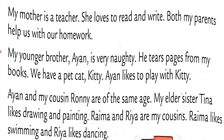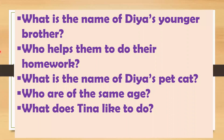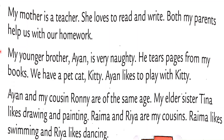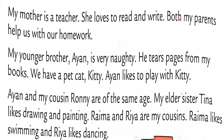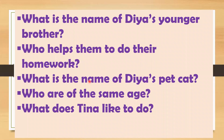Now a few questions: What is the name of Dia's younger brother? The answer is Ayan. Who helps them with their homework? Both my parents help us with our homework — so the answer is their parents help them. What is the name of Dia's pet cat? The name is Kitty.